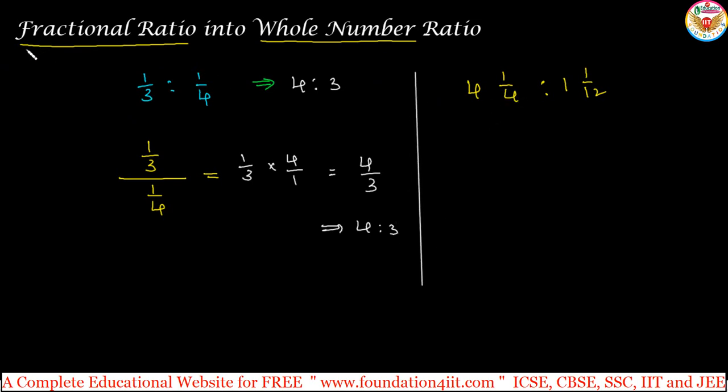4, 1 by 4 convert this into improper fraction, 16 plus 1, 17 divided by 4, is to 12 times 1 is 12 plus 1, 13 by 12. And in this case take the denominators and find LCM.